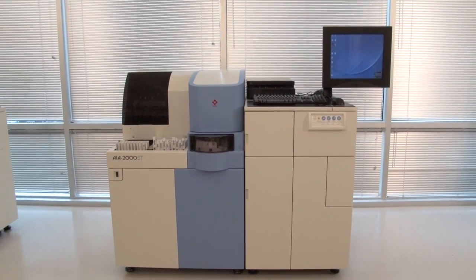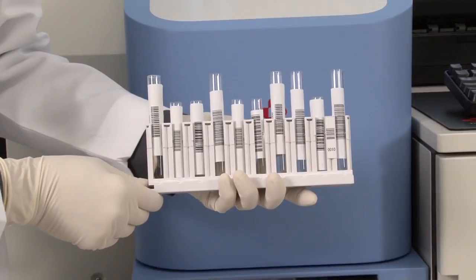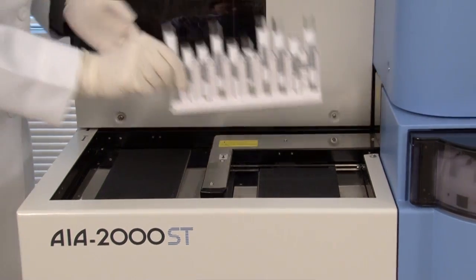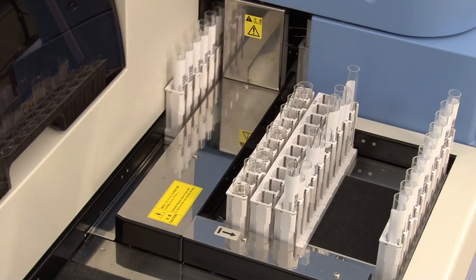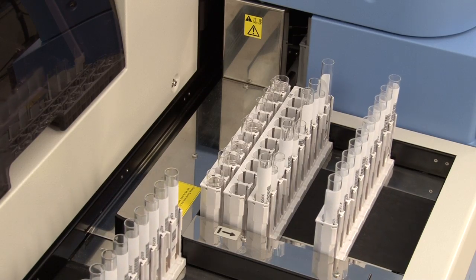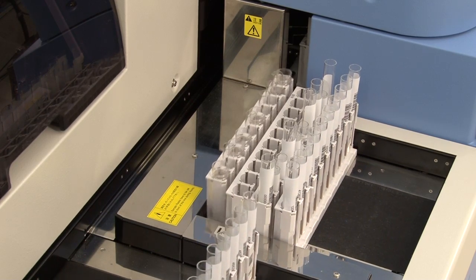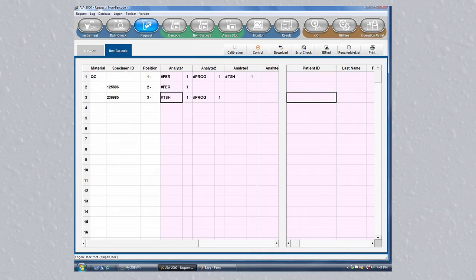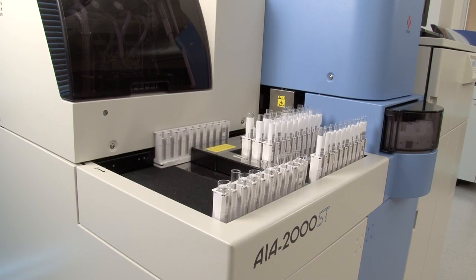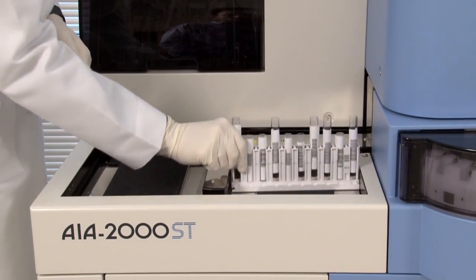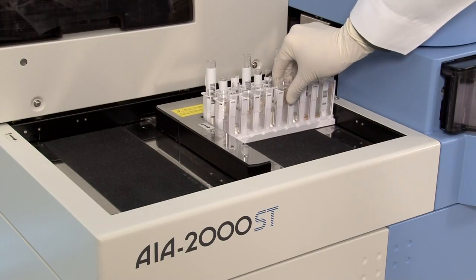To begin testing, the operator simply places bar-coded primary sample tubes or sample cups into the bar-coded sample racks. If the system is interfaced, the bar-coded racks and tubes are read and the requested assays are performed. For non-bar-coded specimens, the operator merely types in the sample ID and the instrument does the rest. Bar-coded and non-bar-coded samples can be placed randomly in the racks and will be assayed according to the work list.